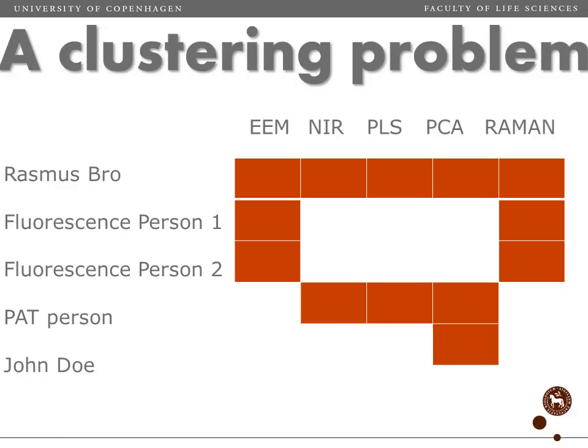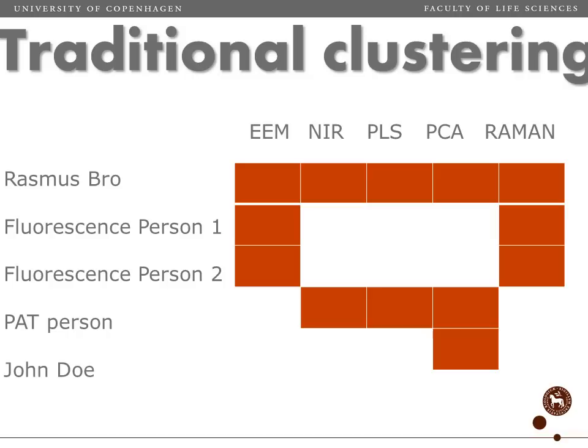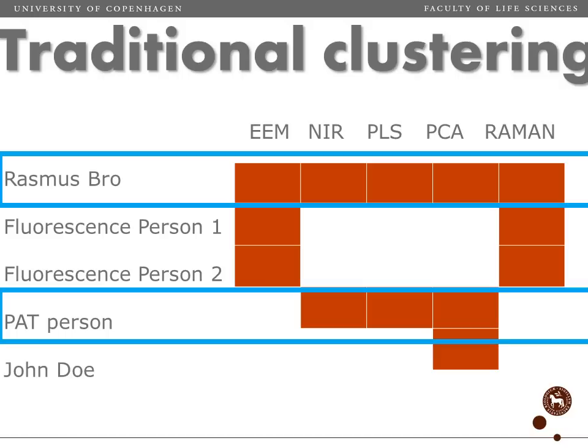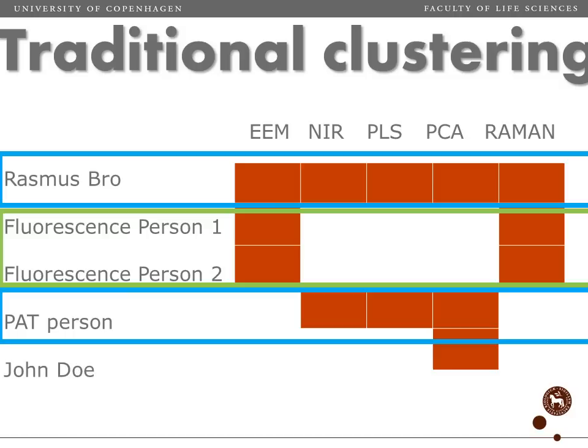As an example, consider the kinds of papers I have published: on fluorescence, NIR, PLS, PCA, and Raman spectroscopy. A fluorescence person would have published on EEM and also Raman, whereas a process analytical technology (PAT) person would have published on NIR, PLS, and PCA. If we do clustering, I would probably end up in a cluster with the PAT person because we share papers in three subjects, and the two fluorescence persons might end up in one cluster.